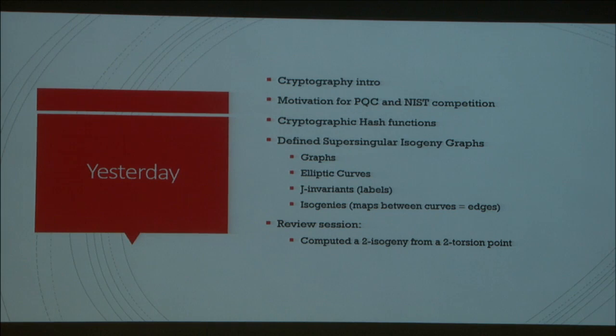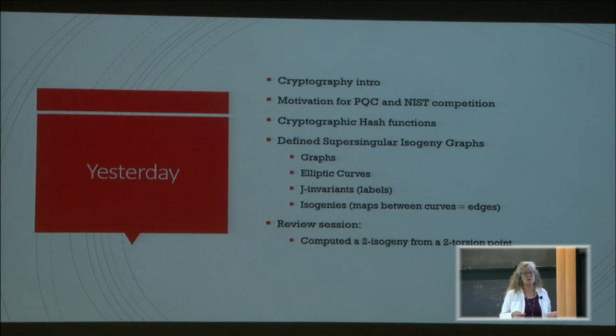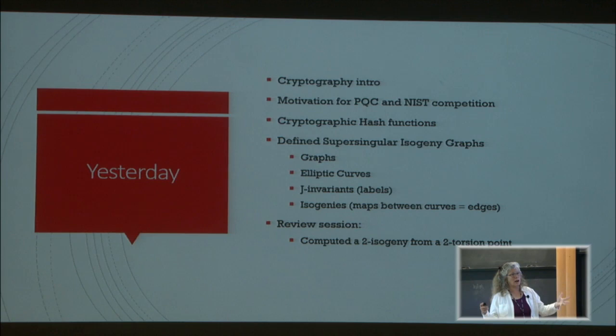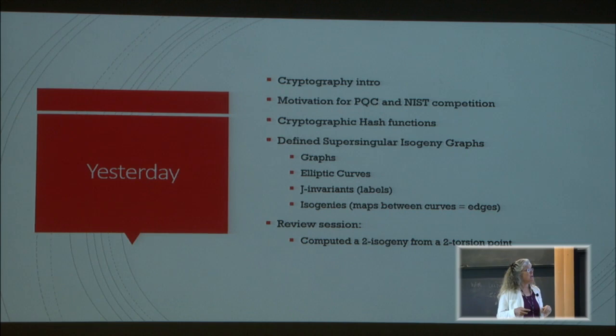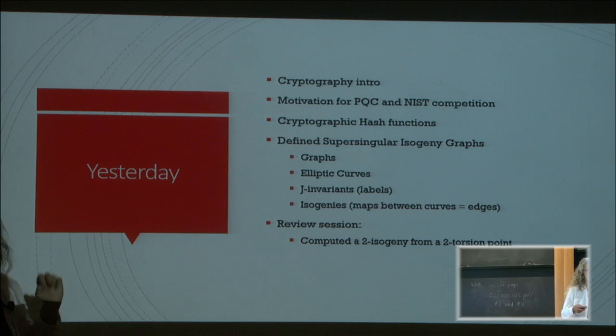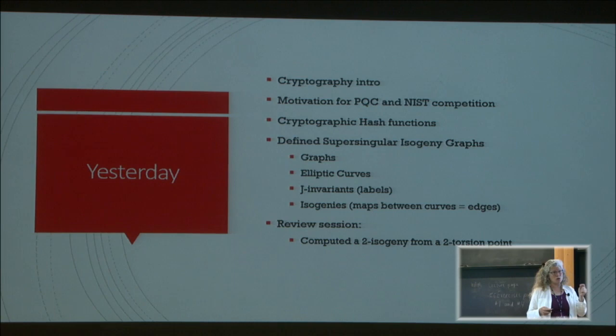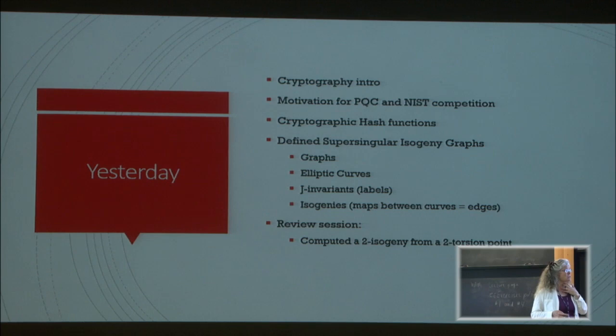I did a little detour talking about cryptographic hash functions because that motivated the construction of using supersingular isogeny graphs for the first time in cryptography. For supersingular isogeny graphs, we did a very high-level definition — what a graph is, what the hard problem was, the routing problem, a high-level description of elliptic curves. Now you've talked a lot more today about elliptic curves, j-invariants (which are labels for our elliptic curves), isogenies (which are the maps between elliptic curves making up the edges of the graph), and in the review session you actually computed a 2-isogeny from a 2-torsion point.